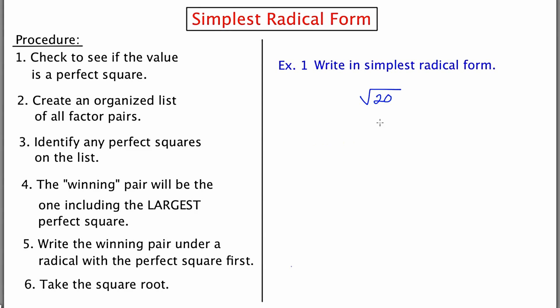Create an organized list of all factor pairs. I'm going to think about the number 20 and think about all those things that multiply to 20. I'm going to do this in an organized way, starting with the number 1: 1 times 20, 2 times 10, and 4 times 5. The next step is to identify any numbers on the list that are perfect squares. They are 1 and 4.